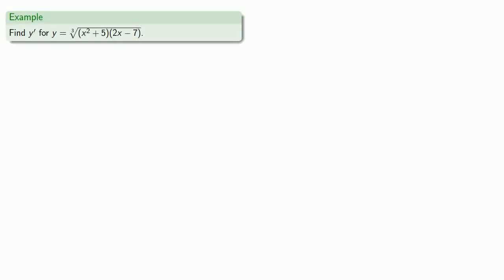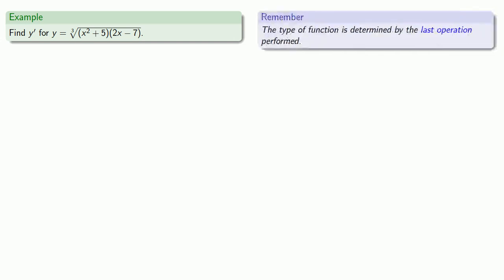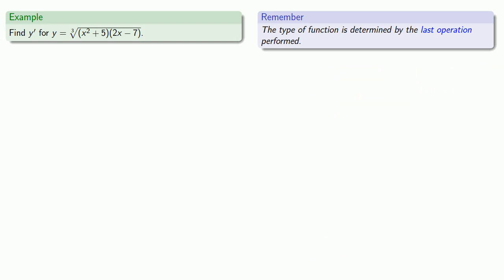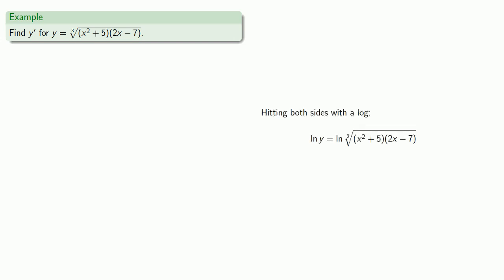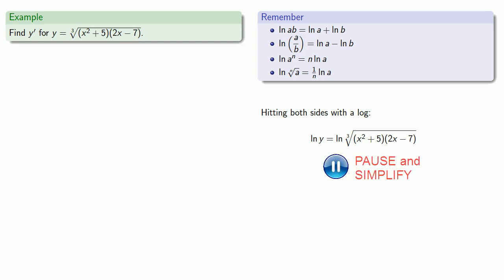Suppose I want to find the derivative of this complicated expression. Remember, the type of function is determined by the last operation performed, and this is a root function. That's important because logs can simplify roots. So let's hit both sides with the log. And since this is a log of a root, we can simplify it, bringing the index out front as a fraction 1 third.